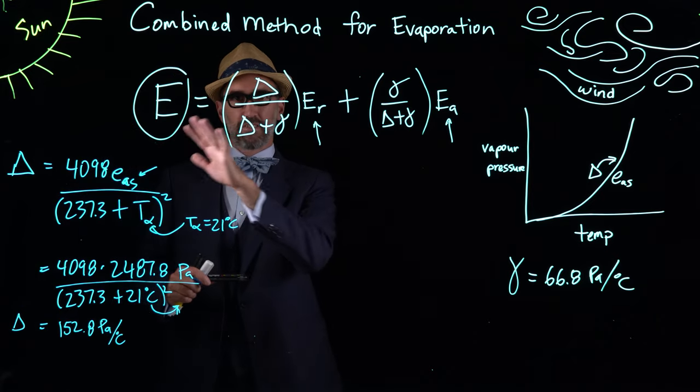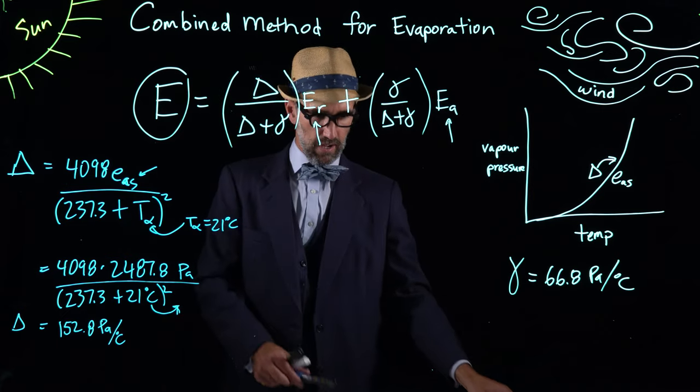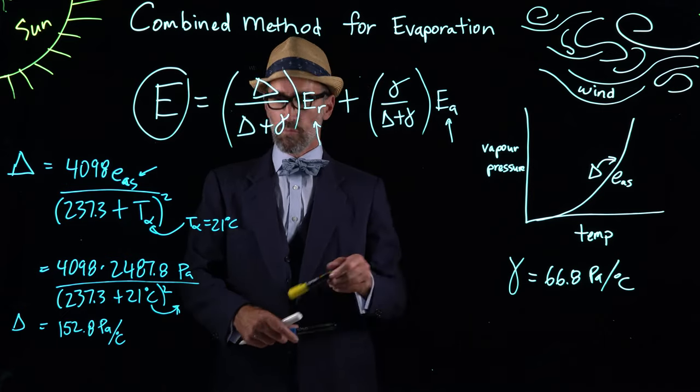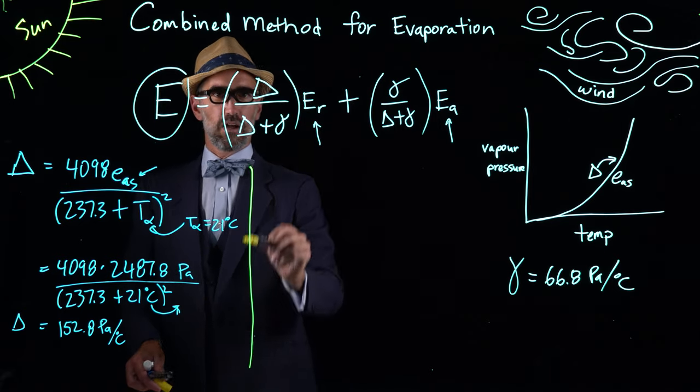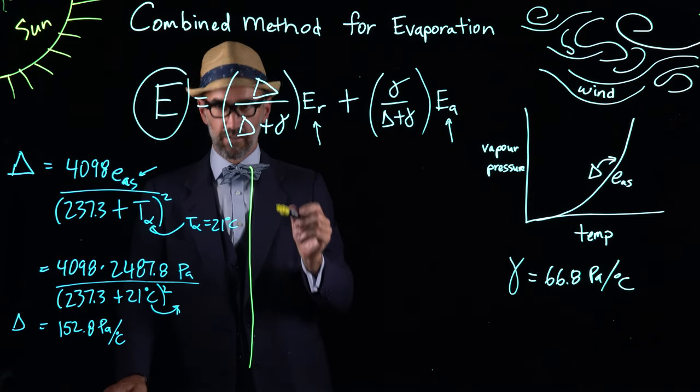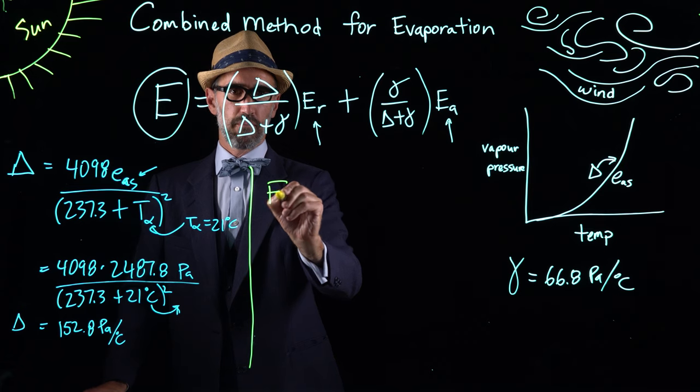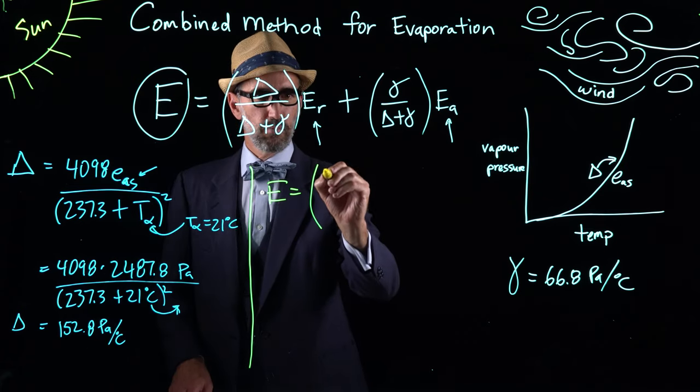Now we have delta, we have gamma, and we can then directly calculate the rate of evaporation using the combined method. Here we rewrite this equation and substitute the values in, so we have E equals our delta 152.8 divided by delta plus gamma which is 219.6.